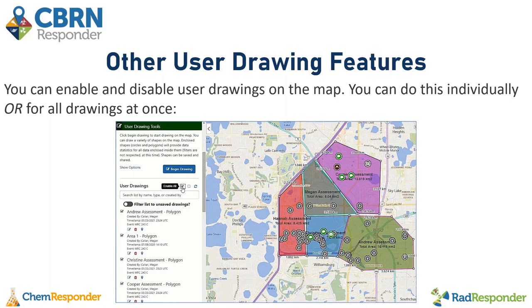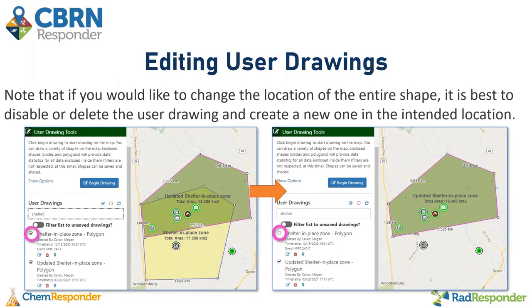If you only want to see a few drawings that apply to you, you may want to uncheck the rest. If you would like to change the location of an entire shape, it is best to either delete or disable the incorrect shape and redraw a new one. For example, if you had a shelter in place zone in the wrong location, you can disable it and create a new one in the correct location.